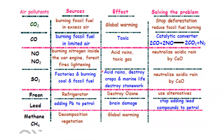As a summary of air pollutants: carbon dioxide is produced by the burning of fossil fuels such as coal, oil, and petrol. It can cause global warming. To solve this problem, we should stop deforestation, because trees absorb carbon dioxide and undergo photosynthesis.